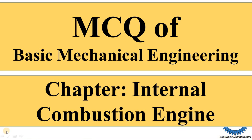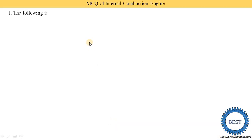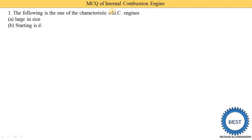In this video, I explain objective type questions of internal combustion engines. The first MCQ: which of the following is a characteristic of an IC engine? Option A: large in size, starting is difficult. Option B: cheaper fuel may be used. Option C: more efficient. Option D is the correct answer — the IC engine is more efficient.